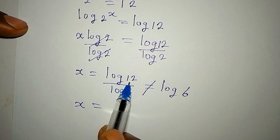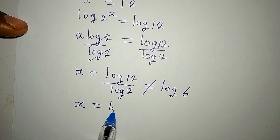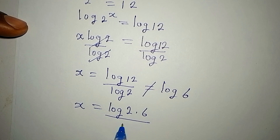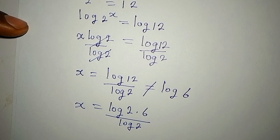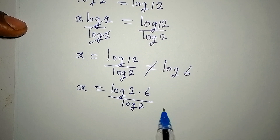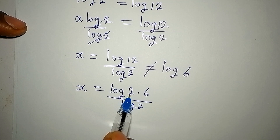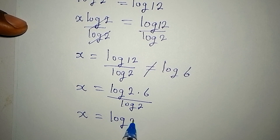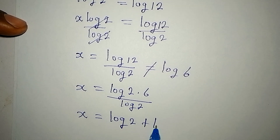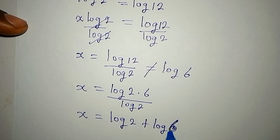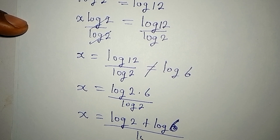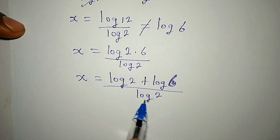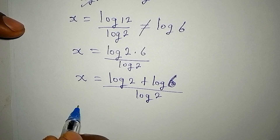x equals log 12, and 12 is log 2 multiplied by 6, so that is over log 2. If we expand this multiplication, we get log 2 plus log 6, and everything is over log 2.